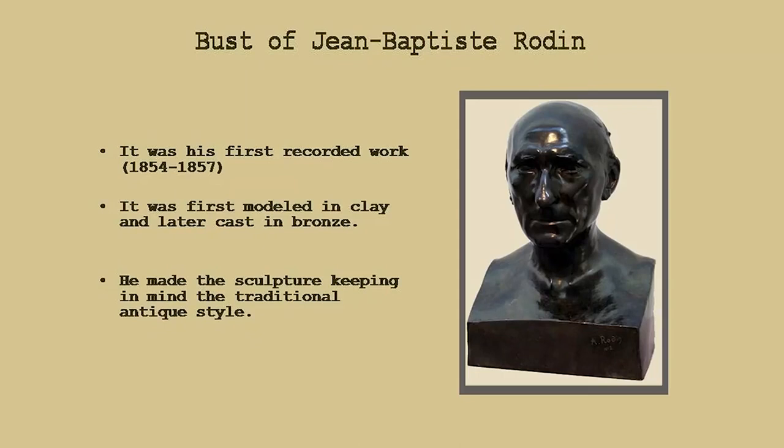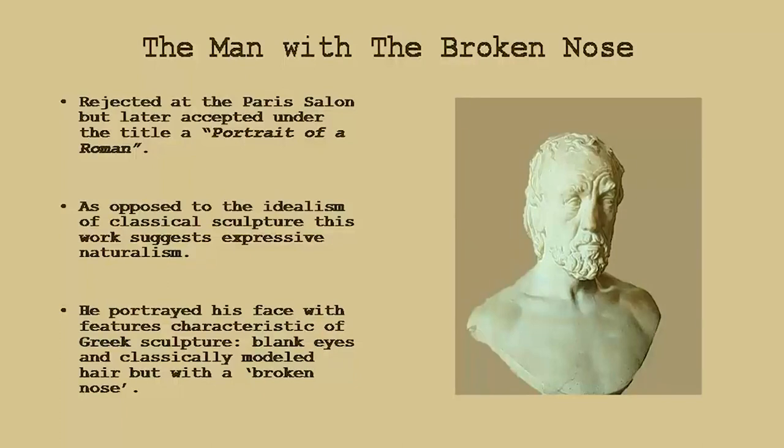This first recorded work by Rodin was first modeled in clay and later cast in bronze. This bust of his father clearly reveals that Rodin was very well trained in the traditional classical style of sculpture making, which required him to learn modeling in clay as well as other techniques like stone carving, bronze casting, and plaster casting. We shall gradually see where exactly he was trying to break from traditional norms and become a modernist.